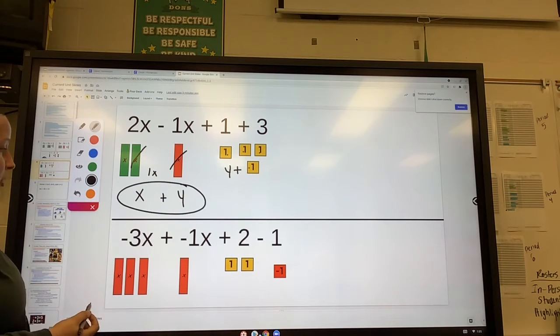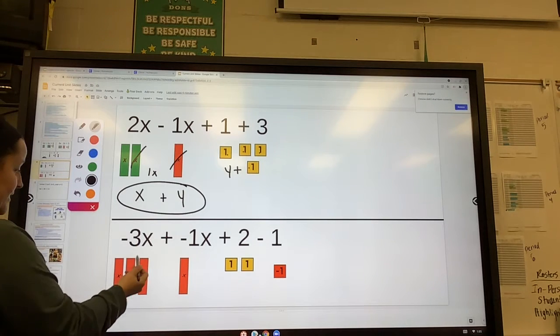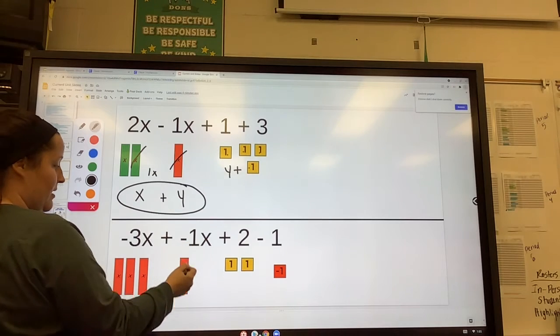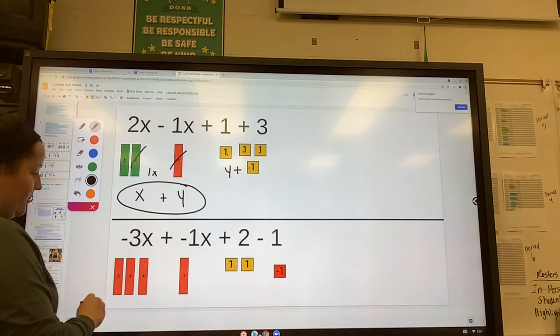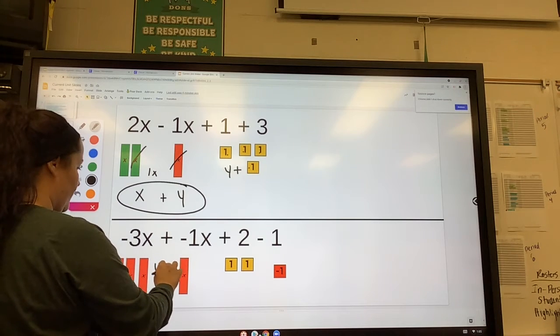In the second example, again, we can combine the rectangles. So it's negative 3x's. So there are 3 red x's plus negative 1x. There's 1 negative there. So this is 1, 2, 3, 4. So there are 4 negative x boxes.